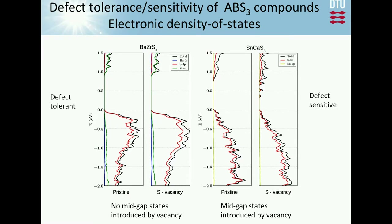The last step is to study defect properties by looking at the density of states when we create vacancies. What is important is whether vacancies introduce states in the band gap, because these can be scattering centers that destroy the material's properties. Materials that are defect sensitive are removed from the screening procedure.